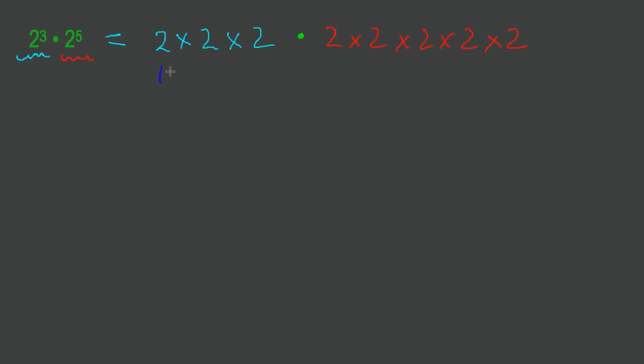So there's 1, 2, 3, 4, 5, 6, 7, 8 of them. 8 2's multiplied together.